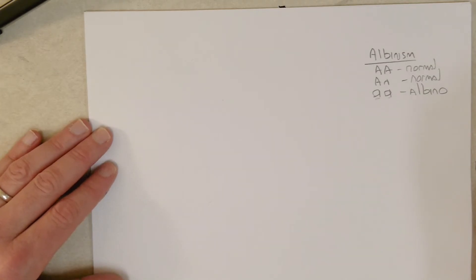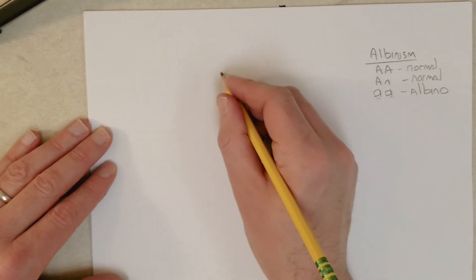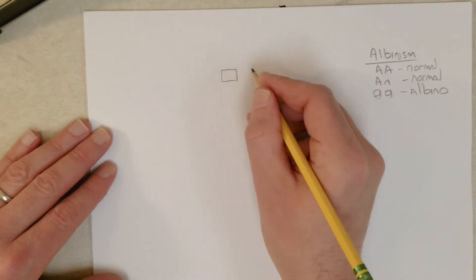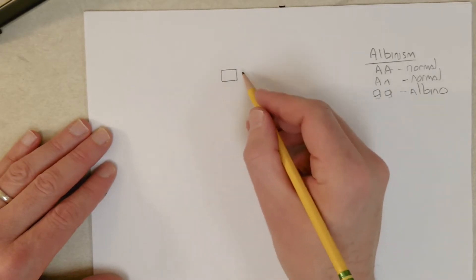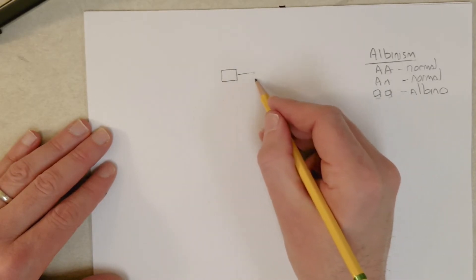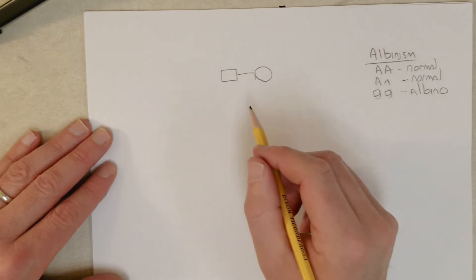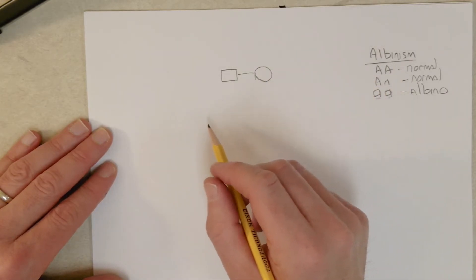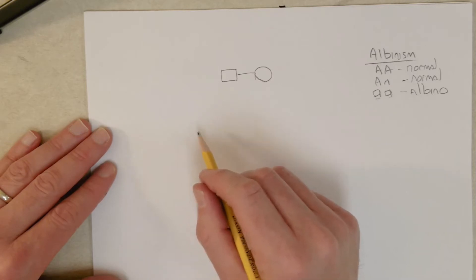Now the question tells us two normal parents. So we're going to use square for males as is tradition, and circle for females. The question says two normal parents.